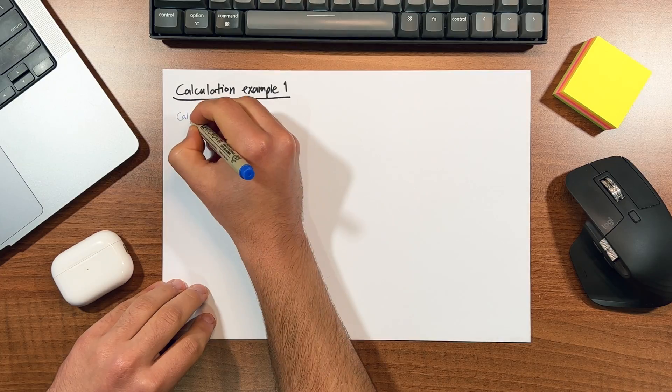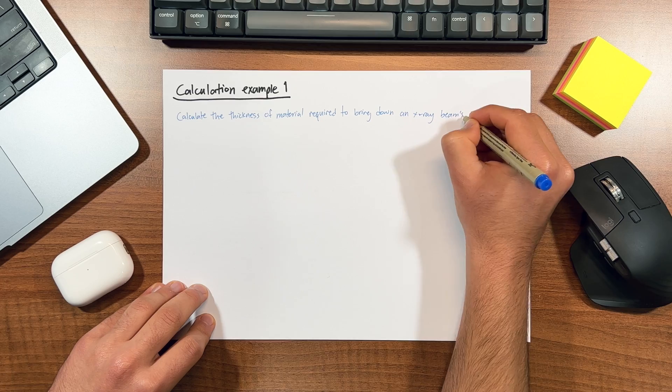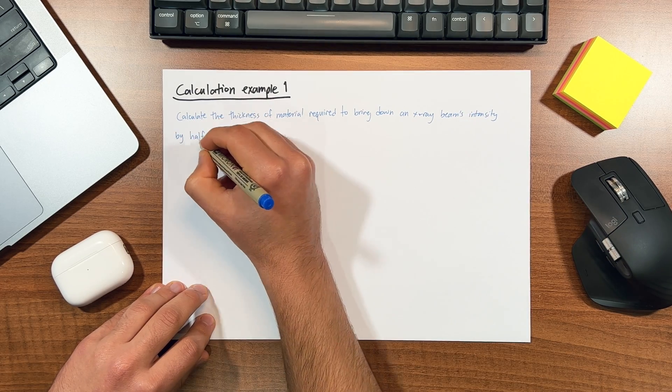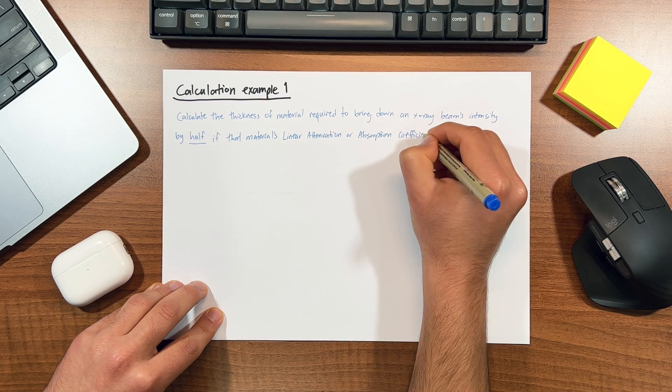Alright, now let's do an example question. If I asked you to calculate the thickness of material required to bring down an x-ray beam's intensity by half, if that material's linear attenuation or absorption coefficient was 0.4 centimeters minus 1, what would it be? Now pause the video and try to calculate this yourself. I'll wait.